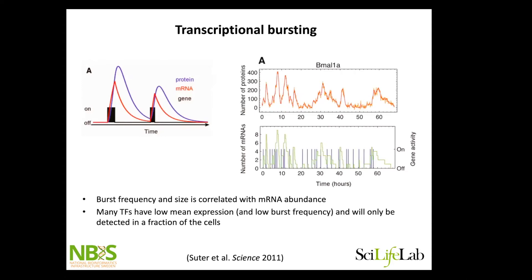Most of you may have heard of transcriptional bursting. Gene expression is not constant — a gene is not on all the time producing mRNA. Transcription occurs in bursts. In this study with an artificial system, they have a reporter of the protein with fluorescence and also measure the mRNAs. A gene gets turned on, recruiting transcription factors and the whole transcriptional machinery. It often forms a transcriptional loop, so once you have the machinery there you can produce a lot of copies of mRNAs, and then for different reasons it falls off.